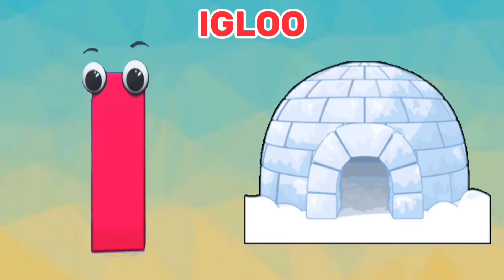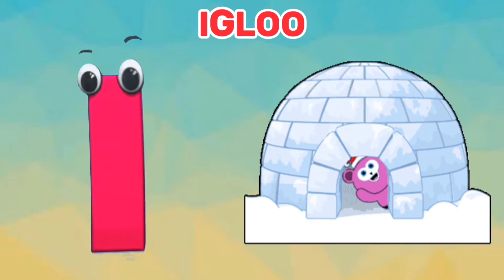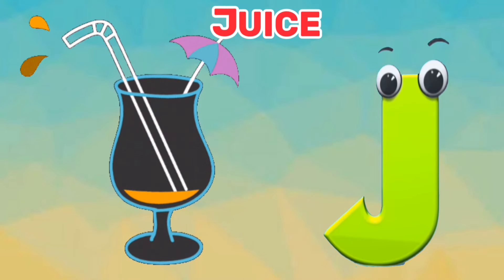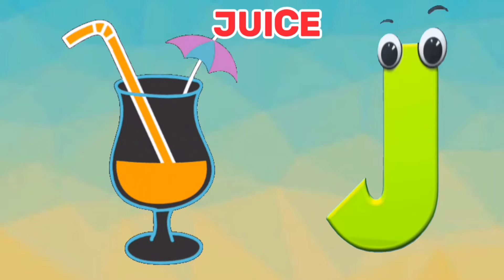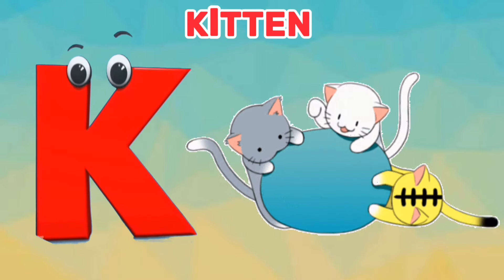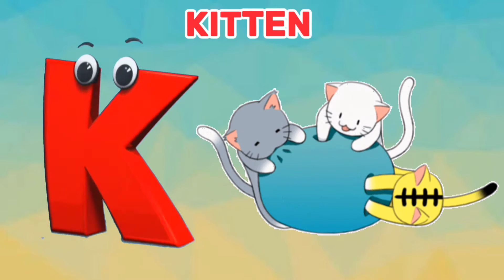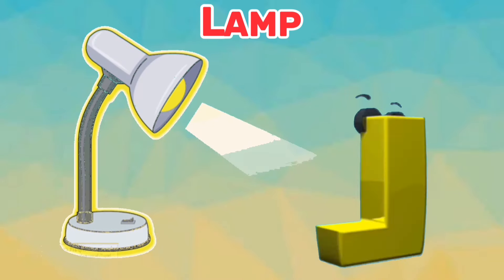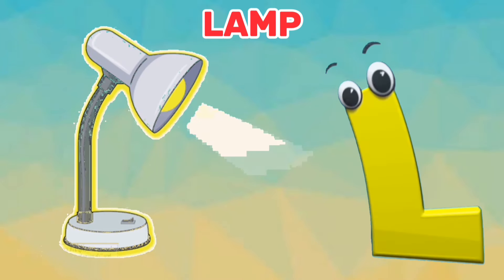I is for igloo. I, i, igloo. J is for juice. J, j, juice. K is for kitten. K, k, kitten. L is for lamp. L, l, lamp.